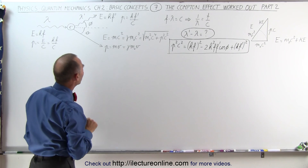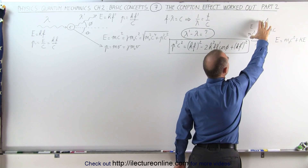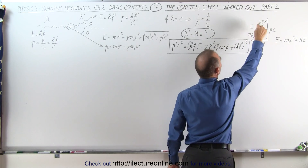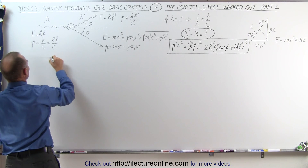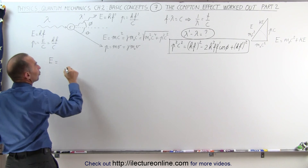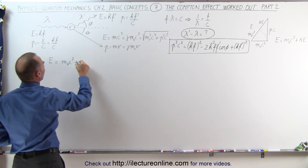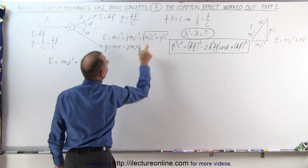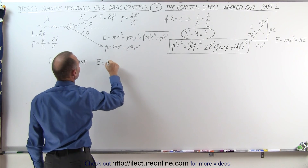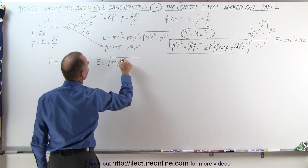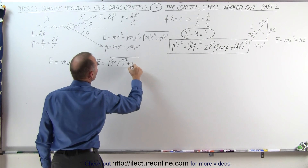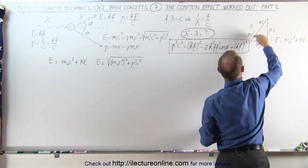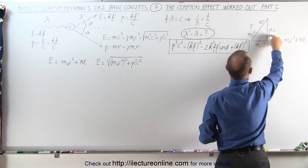We can come up with an equation that describes the energy of the electron after the collision as being the sum of the rest mass energy plus the kinetic energy. So we can say that the energy of the electron is equal to the rest mass energy, M sub-naught C squared, plus the kinetic energy. We can also say that the energy of the electron after the collision is equal to the square root of M sub-naught C squared quantity squared — that's the rest mass squared — plus the momentum squared times the speed of light squared. You can see that readily from the diagram: the energy, represented by the hypotenuse, is equal to the square root of the sum of the squares of the two sides.